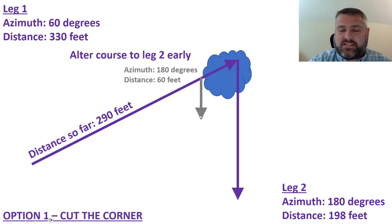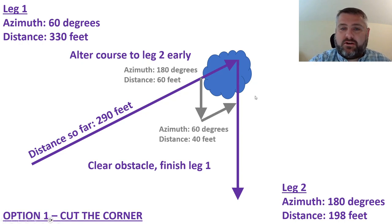In this example they go about 60 feet on leg two and they think they've cleared whatever obstacle is in the corner. At that point you can complete leg one. Clear the obstacle then finish the first leg. Here they needed to go another 40 feet at 60 degrees.